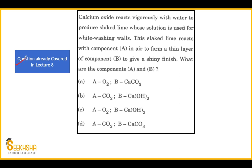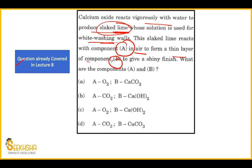This next question we already discussed in lecture number 8. Calcium oxide reacts vigorously with water to produce slaked lime. This slaked lime is used for whitewashing. When you apply slaked lime to walls, it reacts with CO2 in air to form calcium carbonate (CaCO3), which gives the wall a shiny finish. The answer was option D.